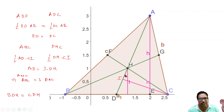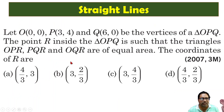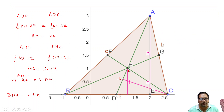Now let us take triangle ADC and triangle DHC. H is the centroid, and we know the centroid divides the median in the ratio 2:1. So DH is one-third of the entire length AD. The area of DHC is (1/2) × DH × CI, while the area of ADC is (1/2) × AD × CI. Since DH is one-third of AD, the area of DHC equals one-third of ADC.